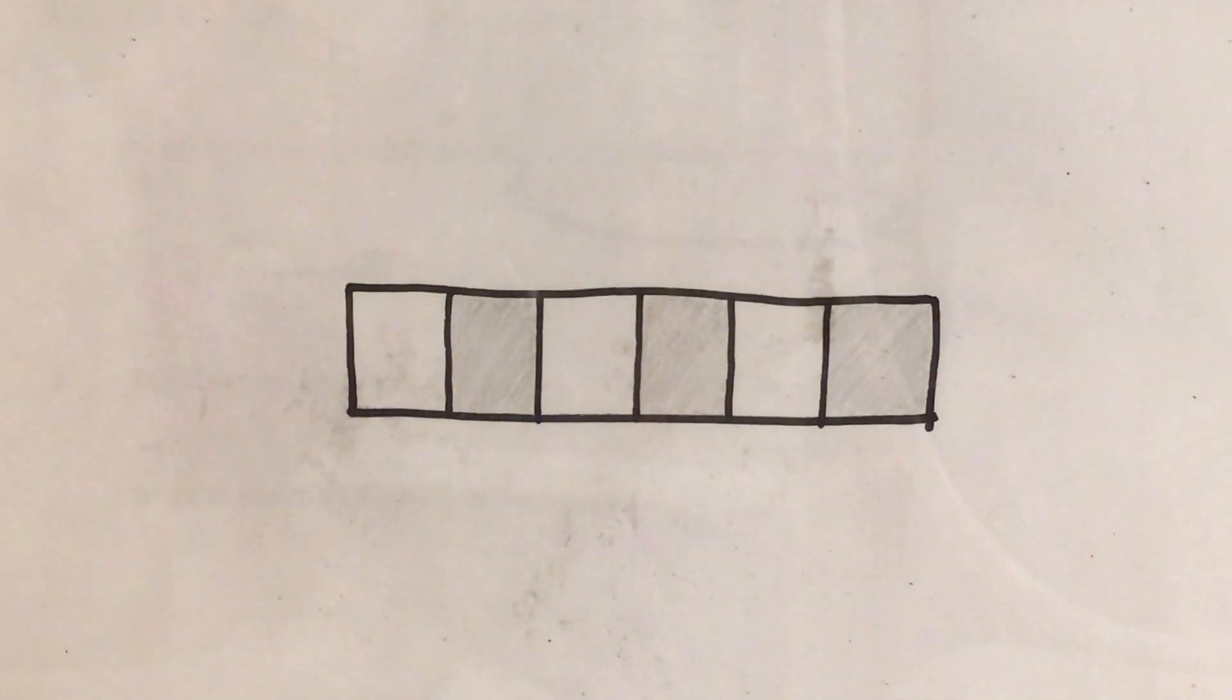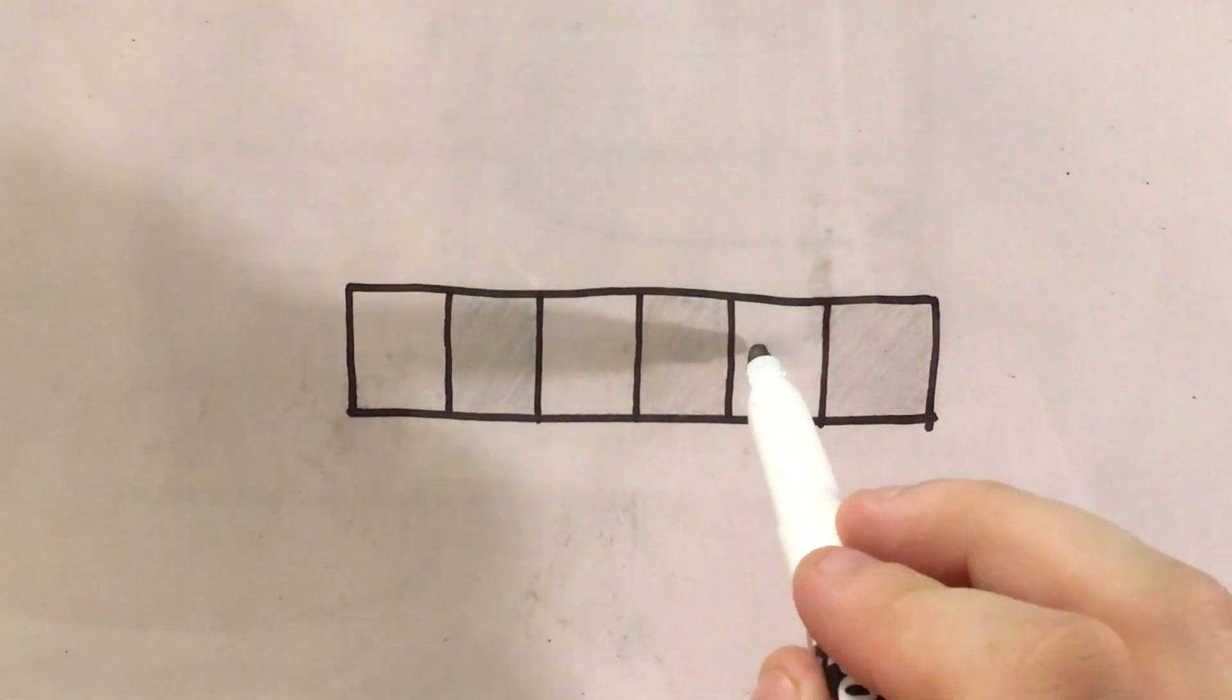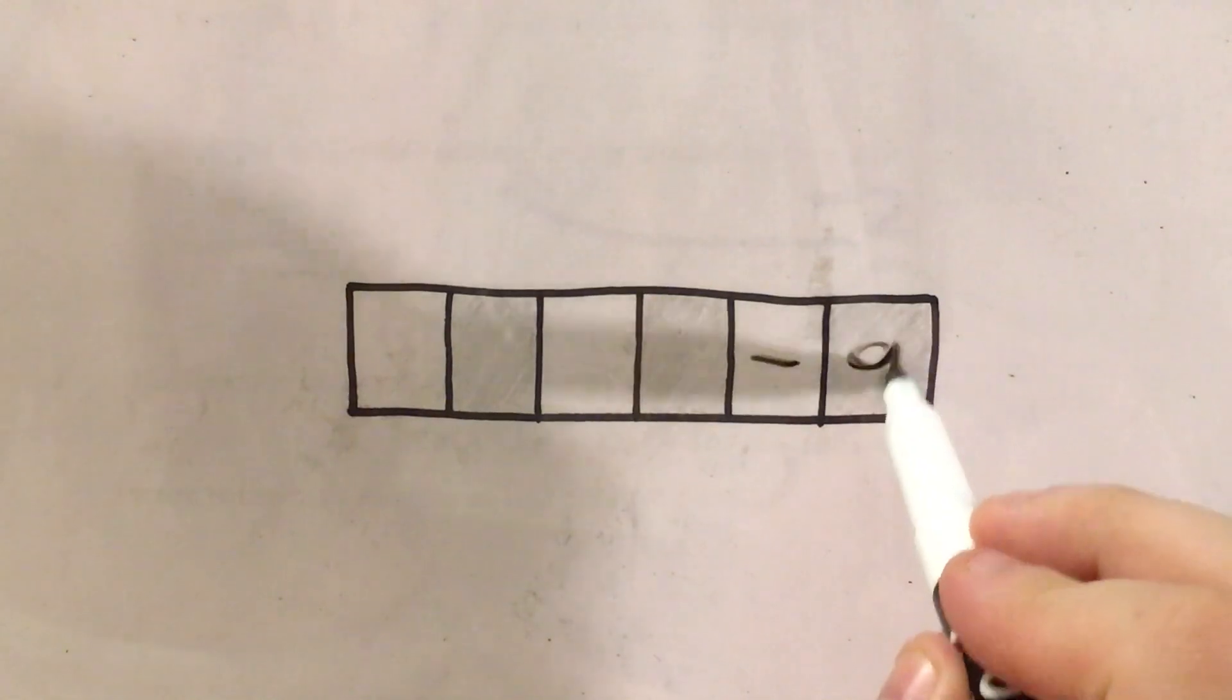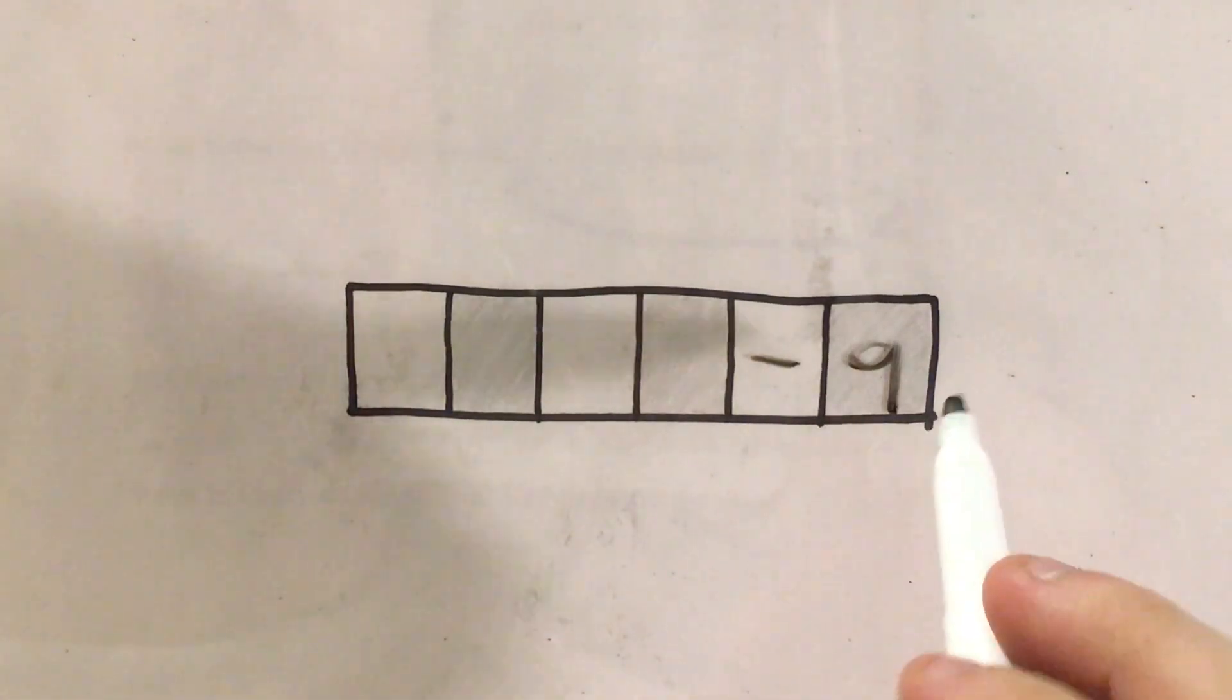So here's a sample of what one of these gridded response boxes could look like. If I want to write negative 9 in as my answer, I need to give the negative sign its own box and then give the 9 its own box.